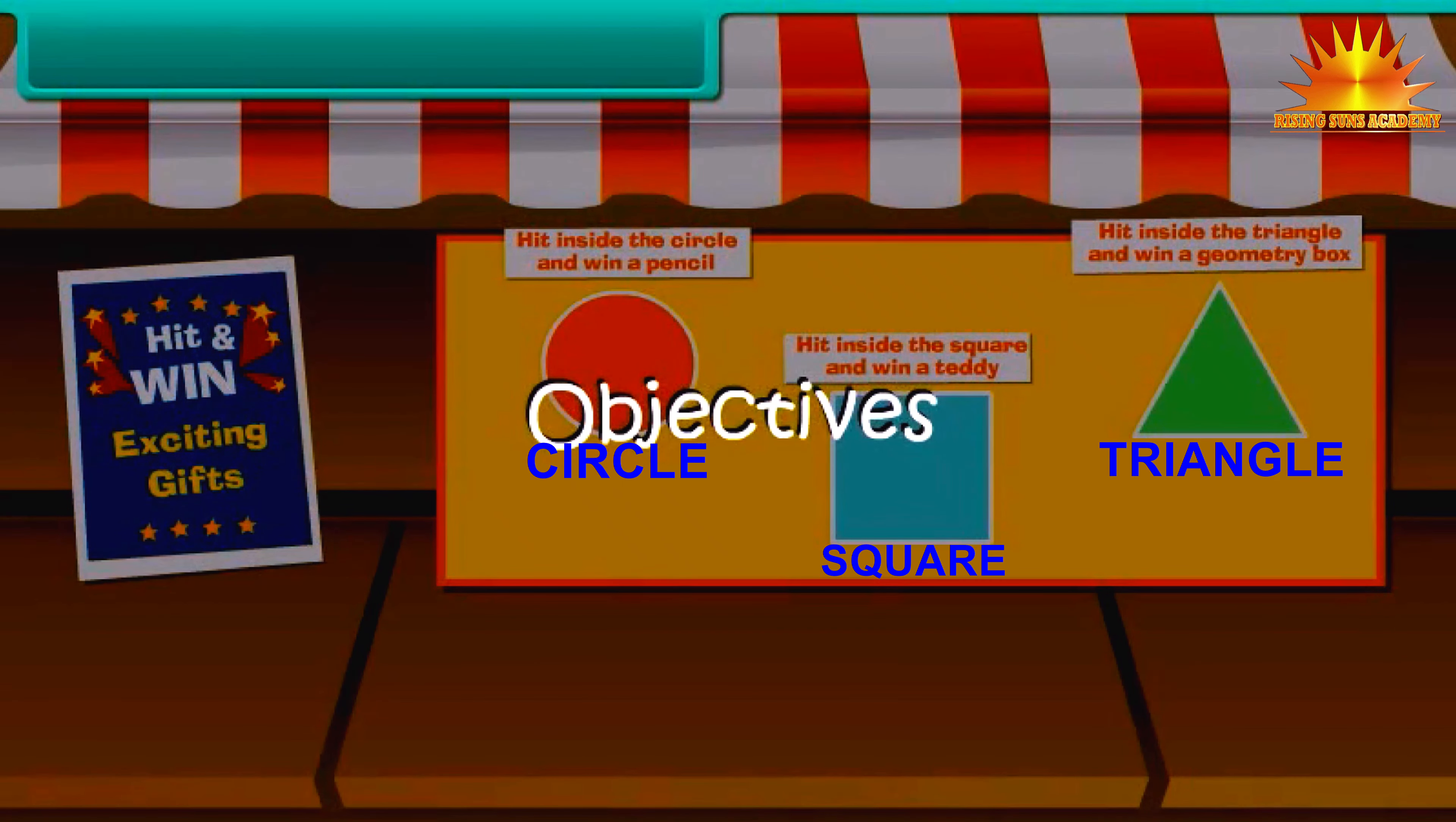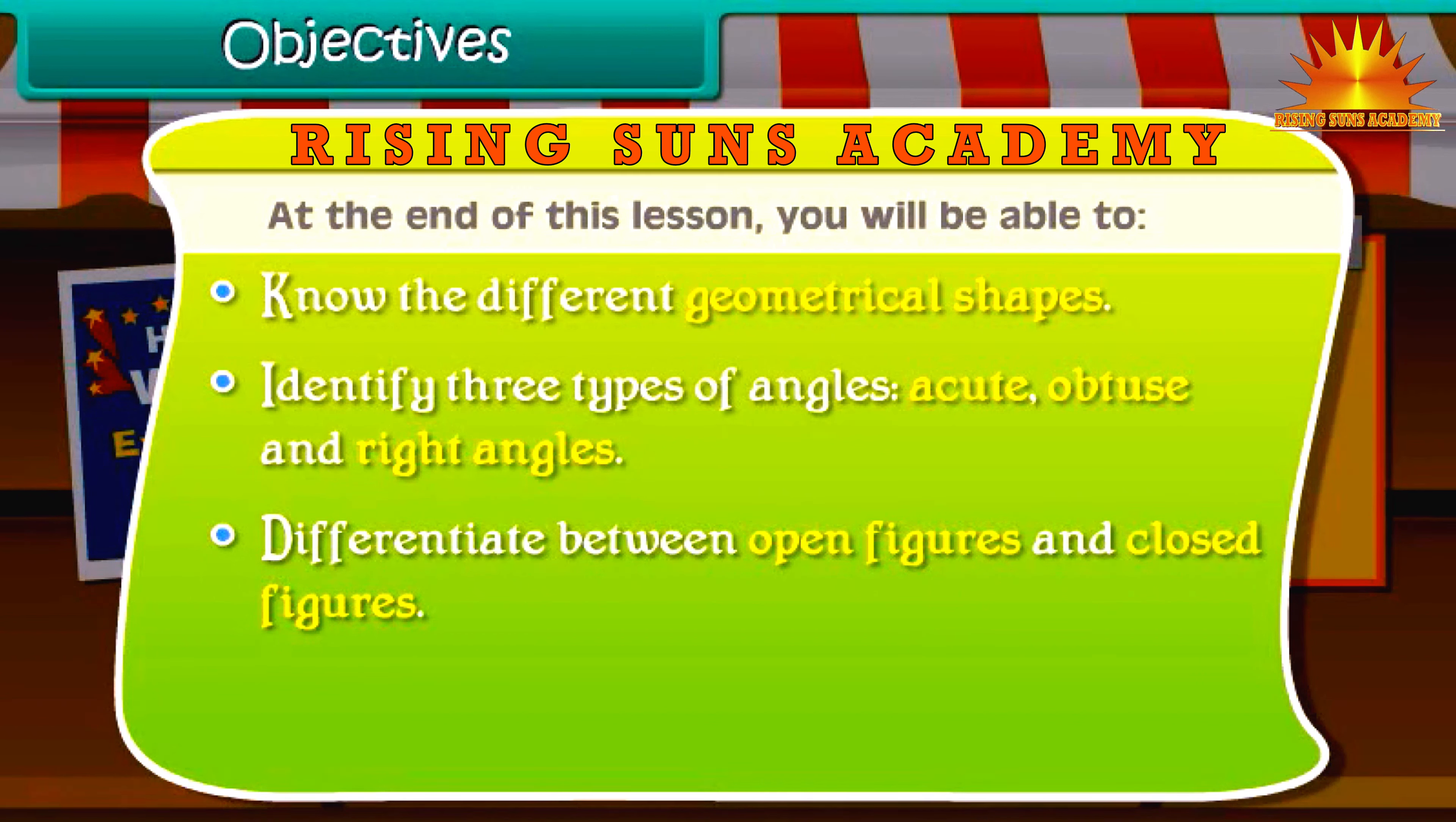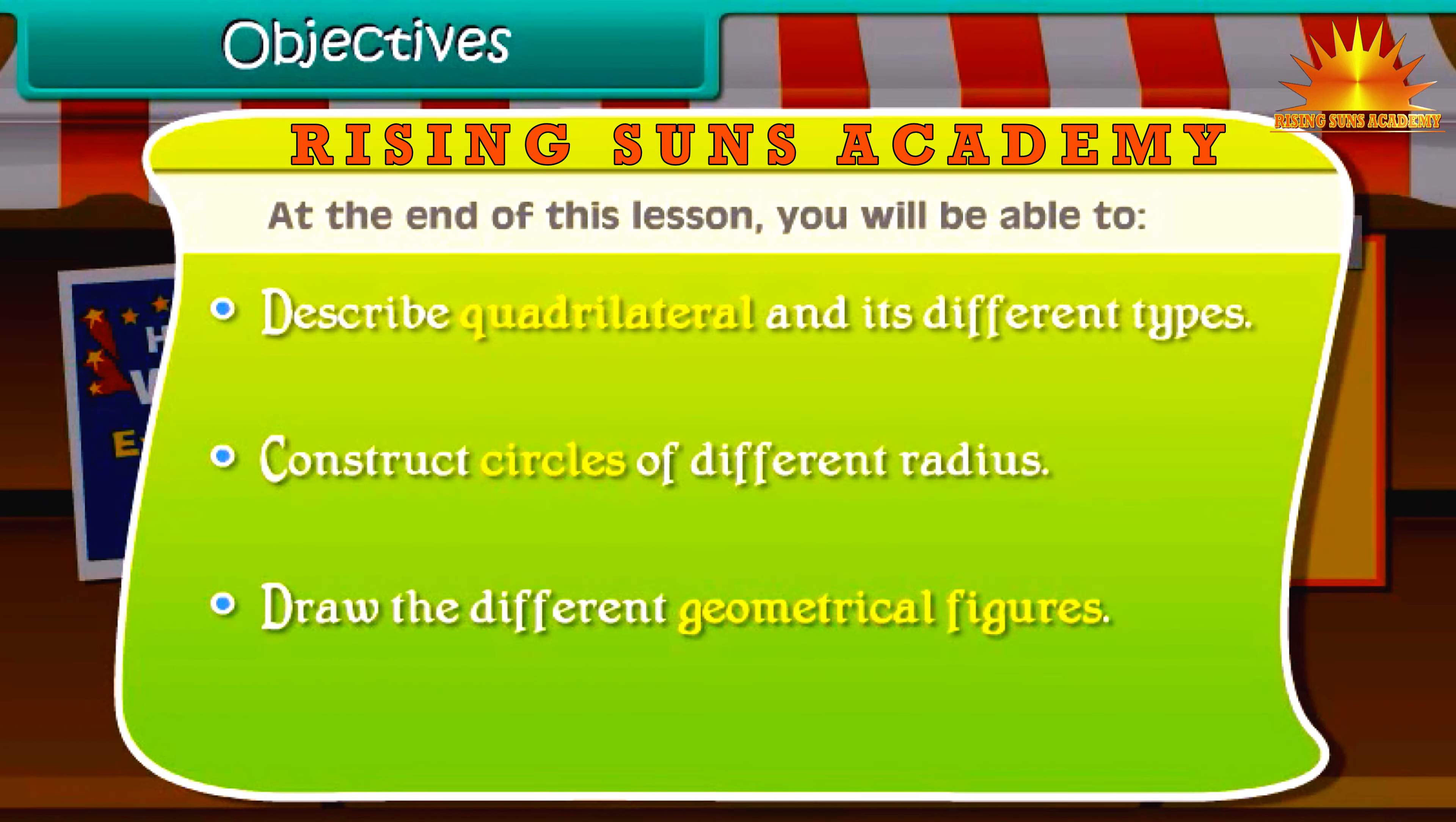Objectives. At the end of this lesson you'll be able to know the different geometrical shapes, identify three types of angles: acute, obtuse and right angles, differentiate between open figures and closed figures, explain triangle and its types, describe quadrilateral and its different types, construct circles of different radius, and draw the different geometrical figures.